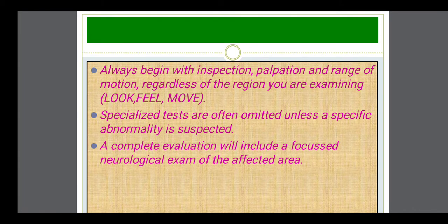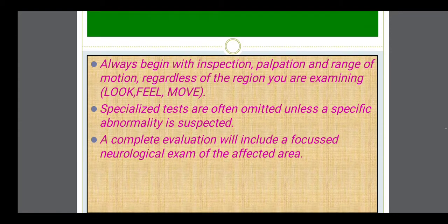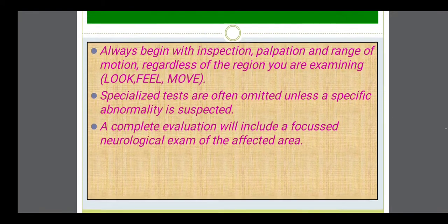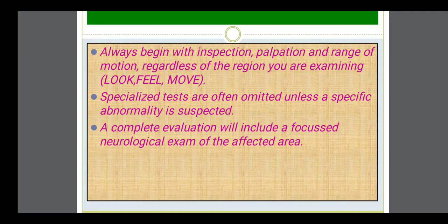When you are doing the examination of the musculoskeletal system, the same sequence will be followed — inspection, palpation, and here range of motion exercises, that means manipulation. Range of motion of the joints is examined. Auscultation and percussion are not required. Neurological examination is also carried out along with the musculoskeletal examination if that particular area has problems related to weakness or numbness.